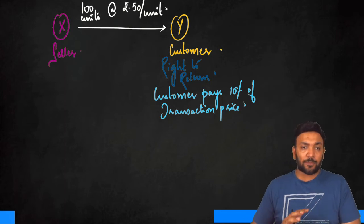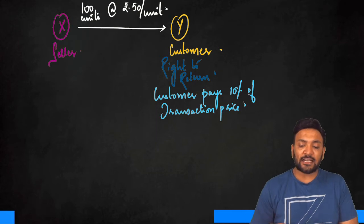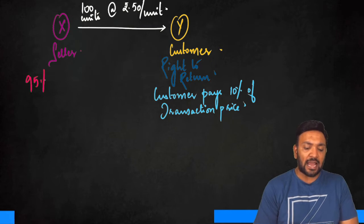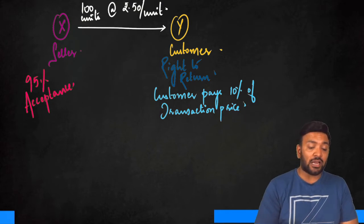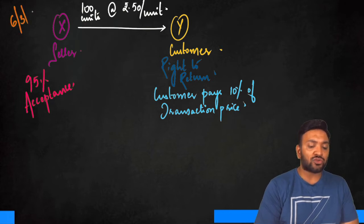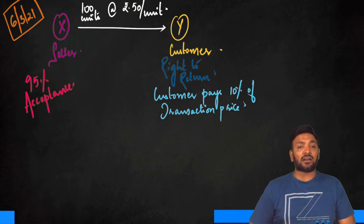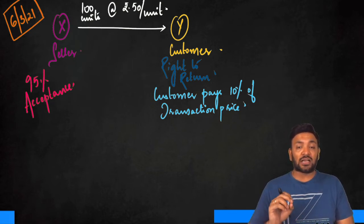Let's say X's expectation is that 95 percent of goods will be accepted, and this transaction actually occurred on 6th March 2021. On this particular date, X sold 100 units at ₹50 per unit to customer Y.